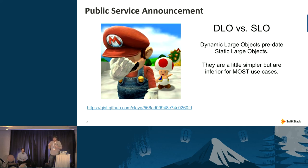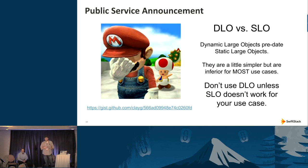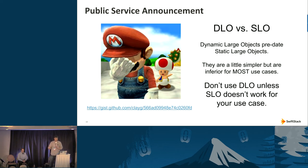DLOs are great and predate static large objects, but a recent OpenStack mailing list thread highlighted how the dynamic nature of DLOs doesn't suit all use cases well. The general recommendation: start with static large objects for large objects, and only use DLOs if you have a niche case like streaming logs where you need to continuously append new data to an object. Start with SLOs and only fall back to DLOs when necessary.